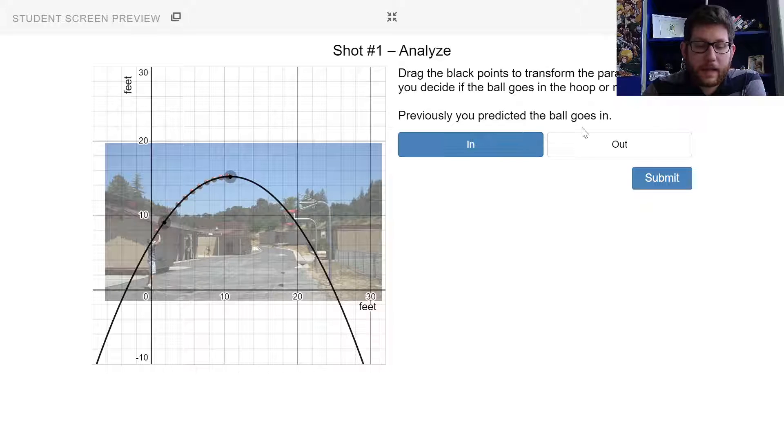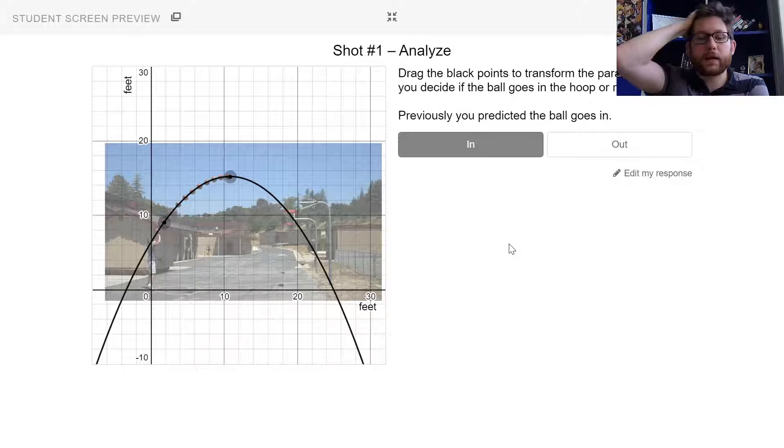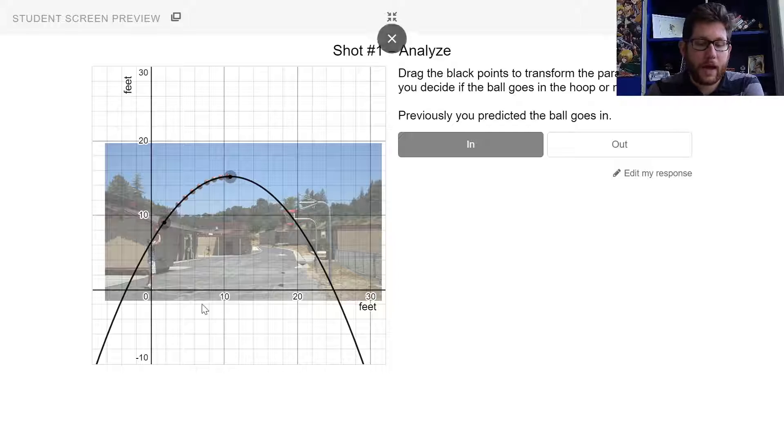So now this time, last time I said it was going to go in, I still think it's going to go in. And I'll submit that. And so notice it says previously you said the ball is going to go in. So it'll tell you what you guessed last time and then make a new guess based off the parabola.